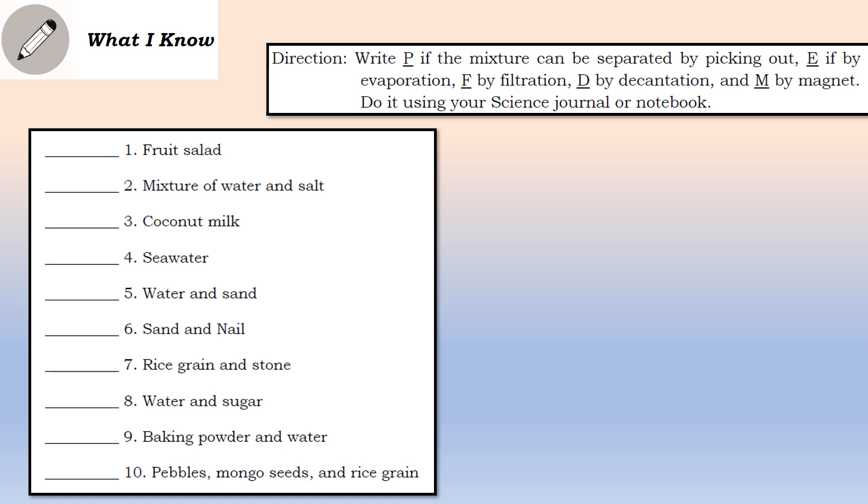Number 1, fruit salad. Number 2, mixture of water and salt. Number 3, coconut milk. Number 4, seawater. Number 5, water and sand. Number 6, sand and nails. Number 7, rice grain and stone. Number 8, water and sugar. Number 9, baking powder and water. Number 10, pebbles, mongo seeds and rice grain.